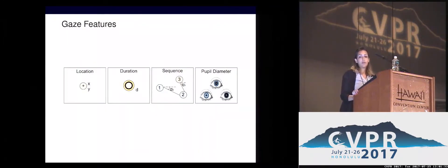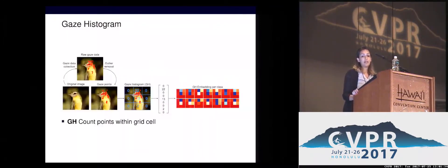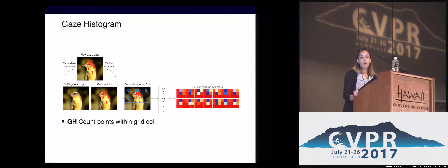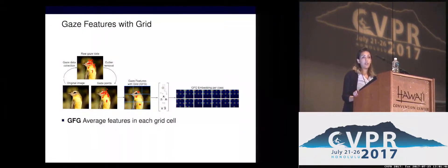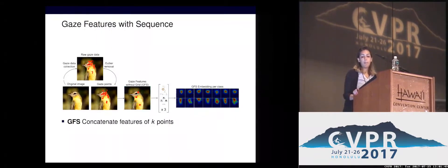We built three types of pair-class gaze embeddings: by overlaying a spatial grid on the image and counting the gaze points in each grid cell, by averaging the gaze features on grid cell level, or by concatenating the gaze features of subsequent points.